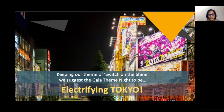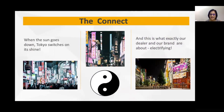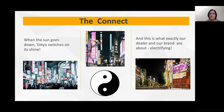That gave us a gala night theme: 'Electrifying Tokyo.' When the sun goes down at night, Tokyo switches on its shine and becomes bright and beautiful — exactly what dealers and brands are about: electrifying, vivacious, energetic, colorful. We drew parallels between our dealers and Tokyo — the common connect is all about shine, lights, and brightness. It is a subset of the main central theme — connected yet different from the traditional overall theme. Once you crack it, it's a lot of fun.